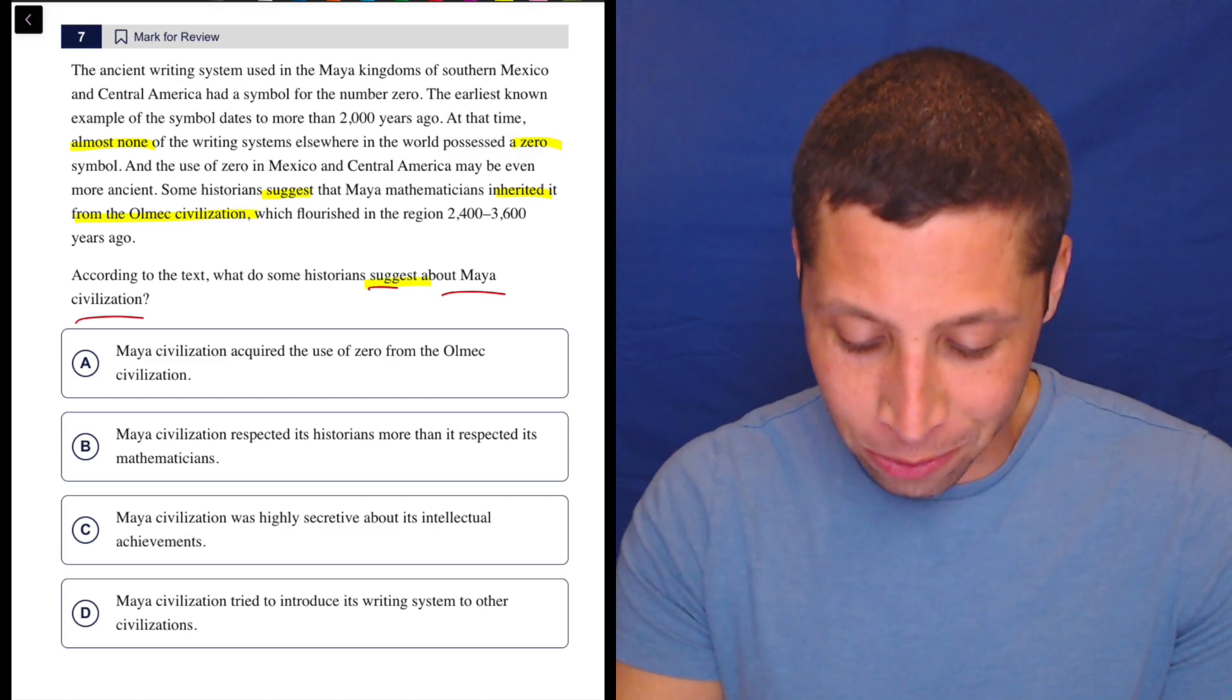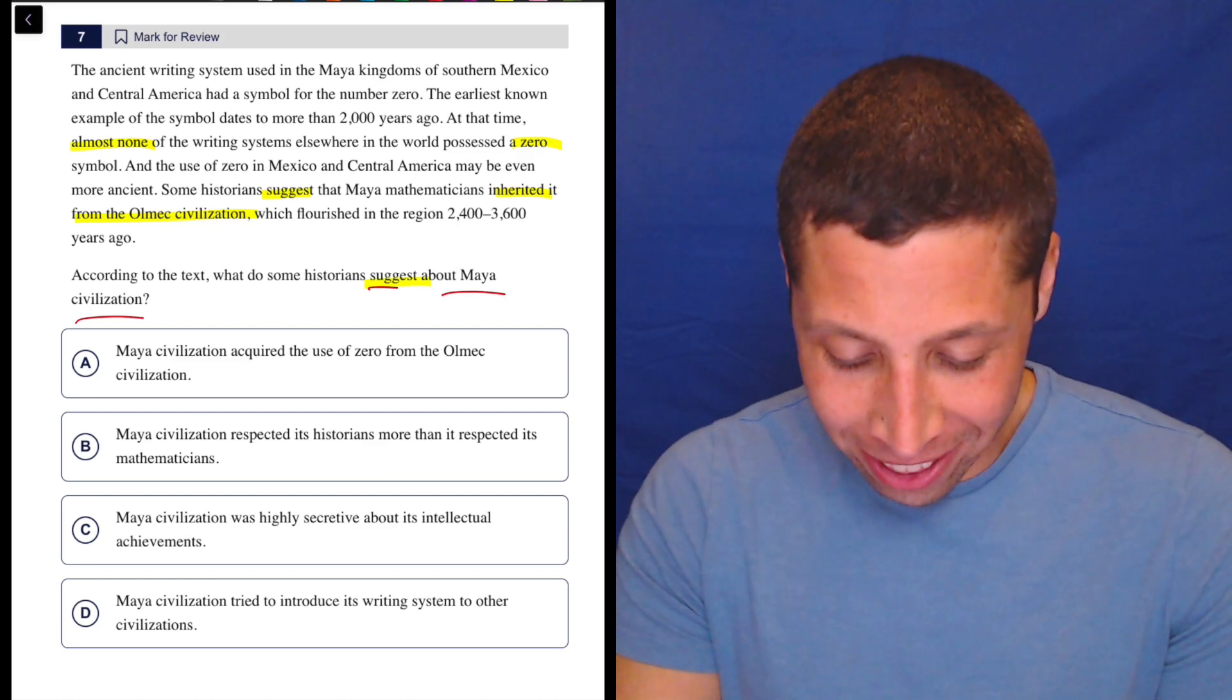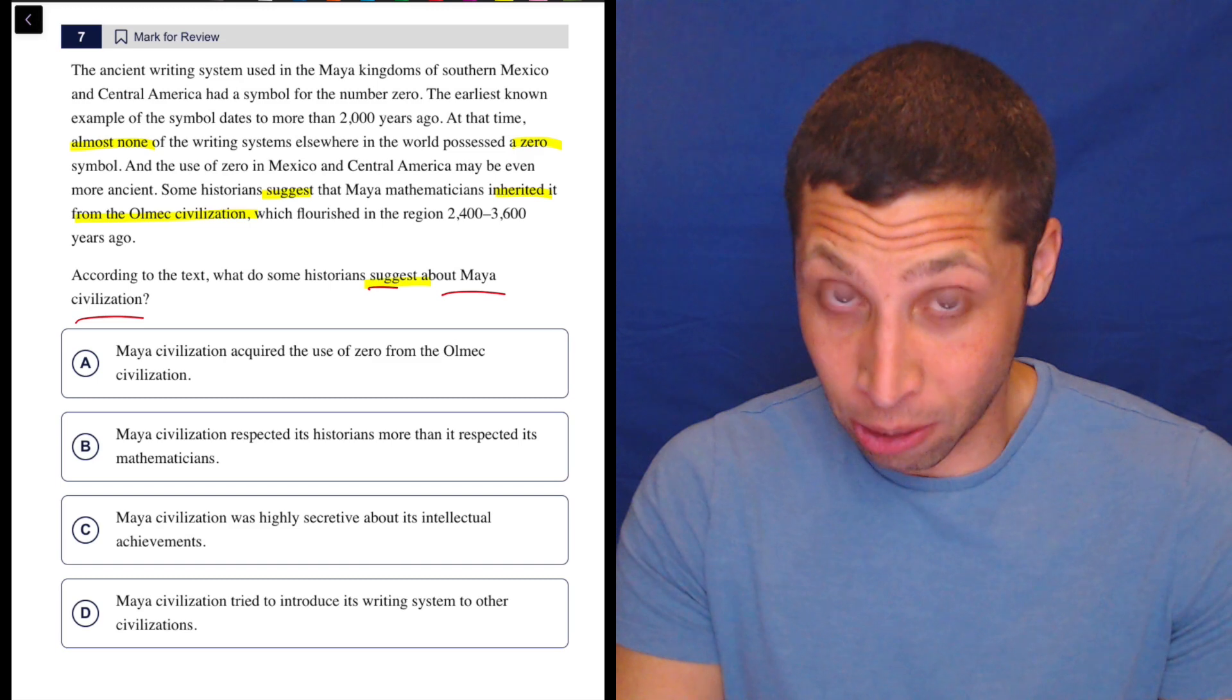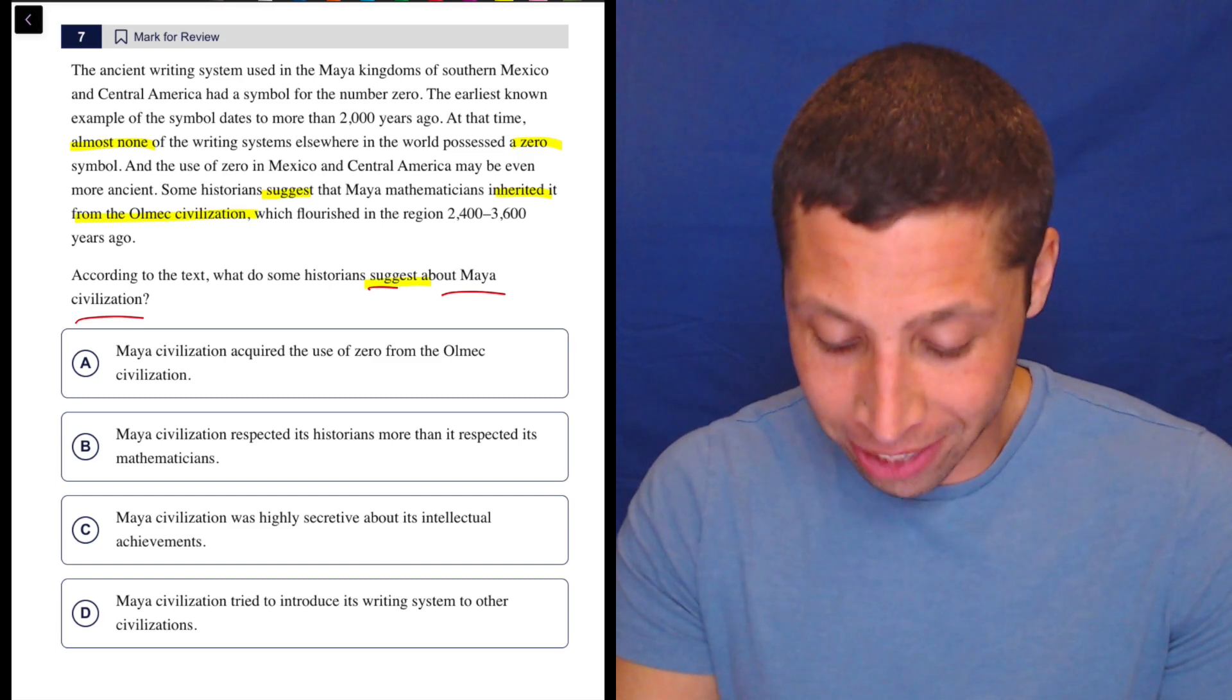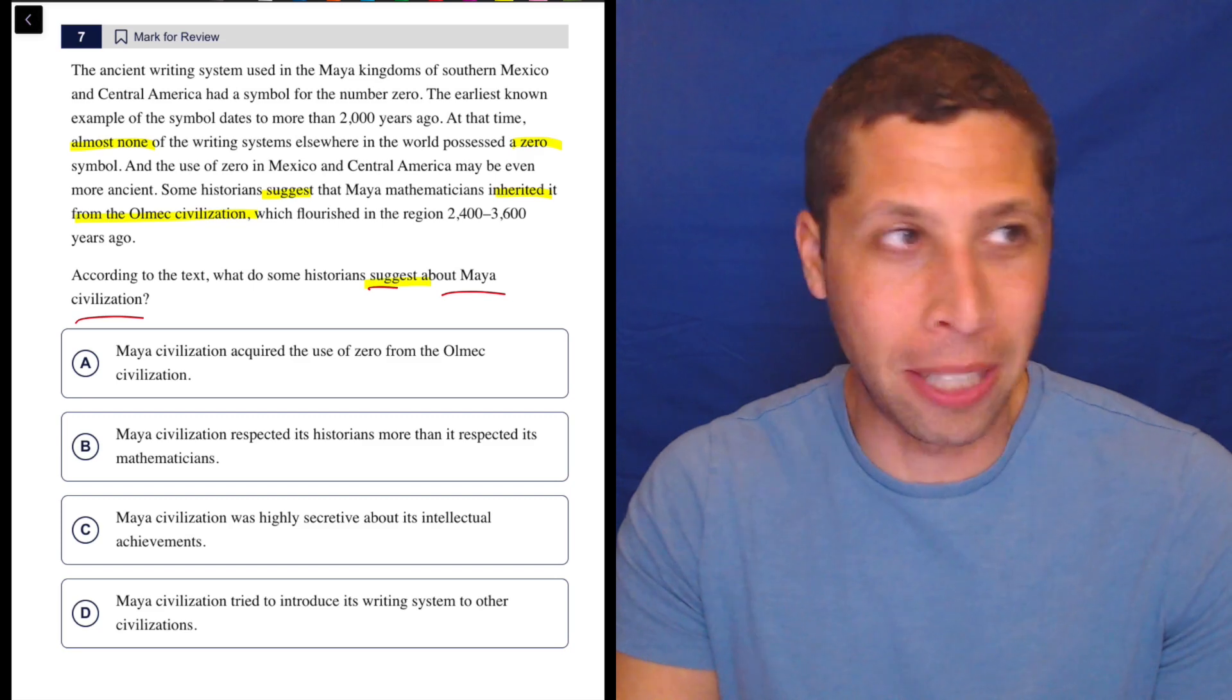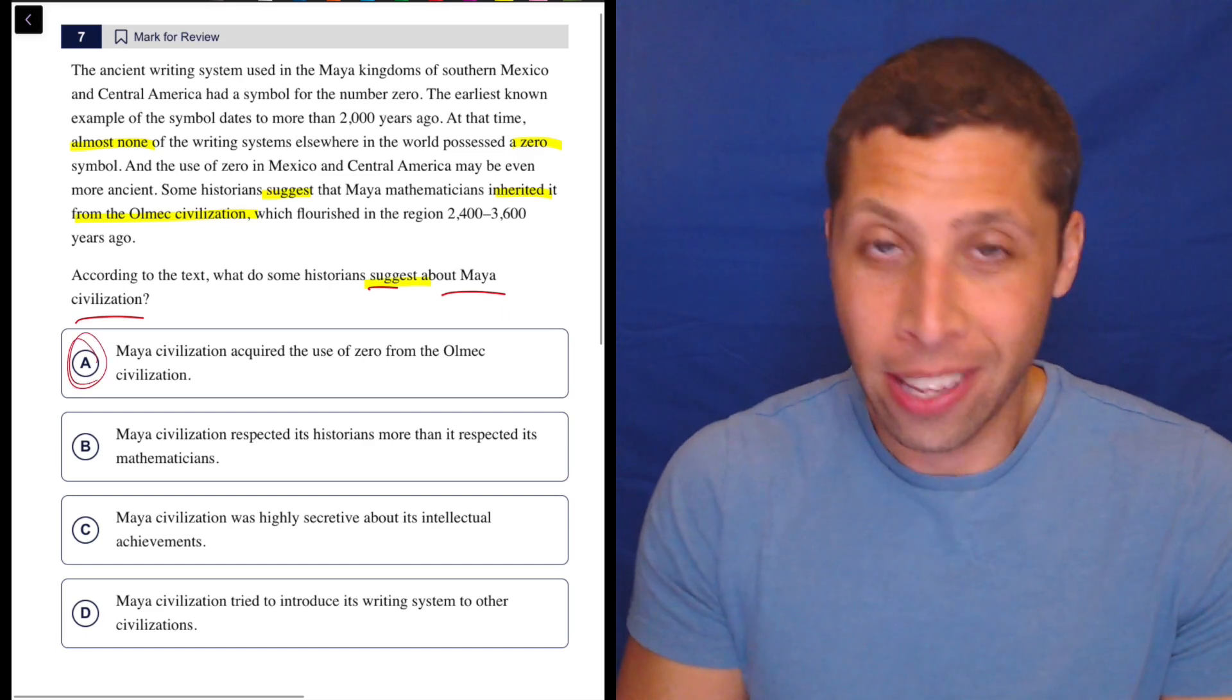Maya civilization acquired the use of zero from the Olmec civilization. Is that just exactly what it said? The last sentence: Some historians suggest that Maya mathematicians inherited it—zero—from the Olmec civilization. Choice A says Maya civilization acquired the use of zero from the Olmec civilization. There are like three words different, but they're saying the same thing. They replaced the pronoun with the actual thing, and instead of inherited, they used the word acquired.